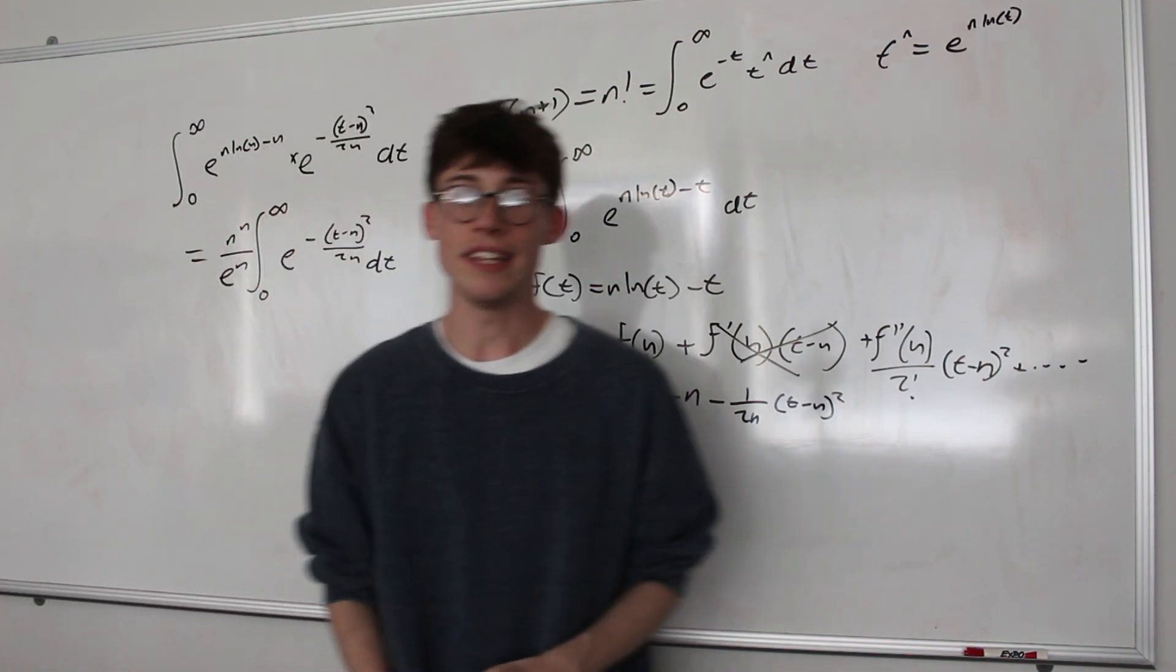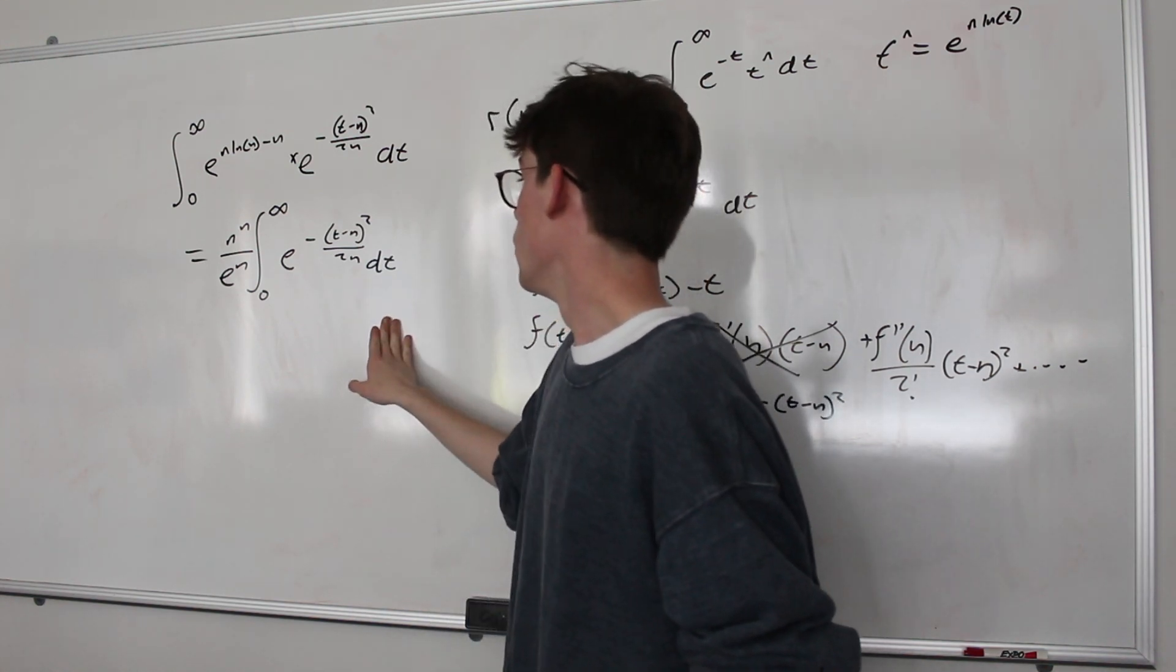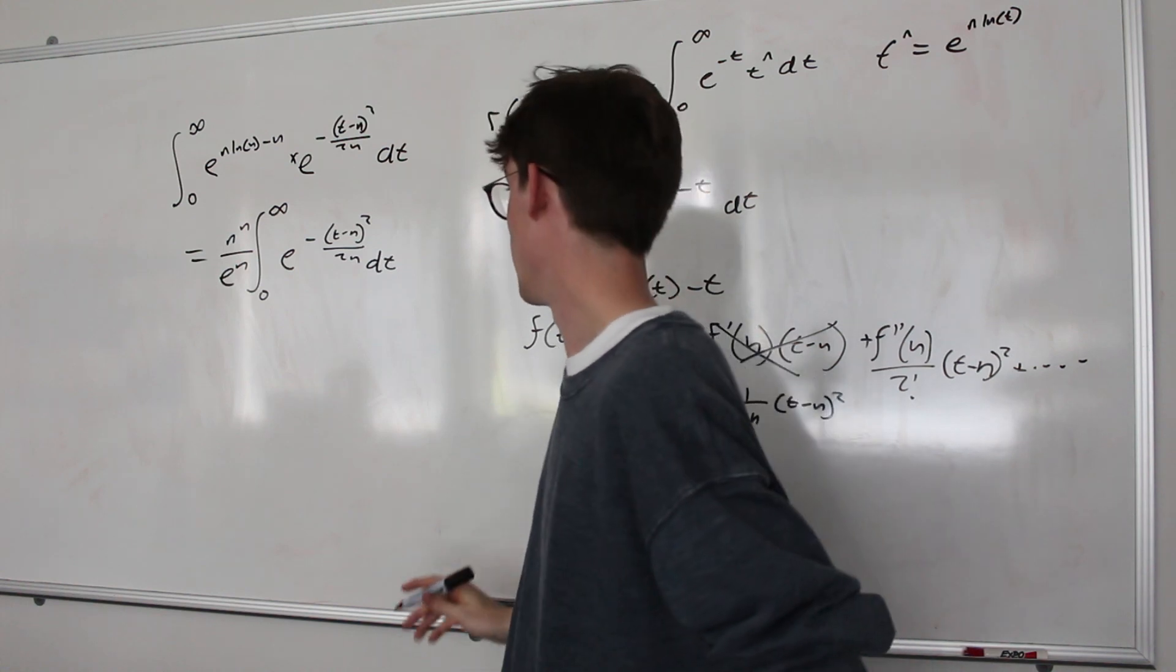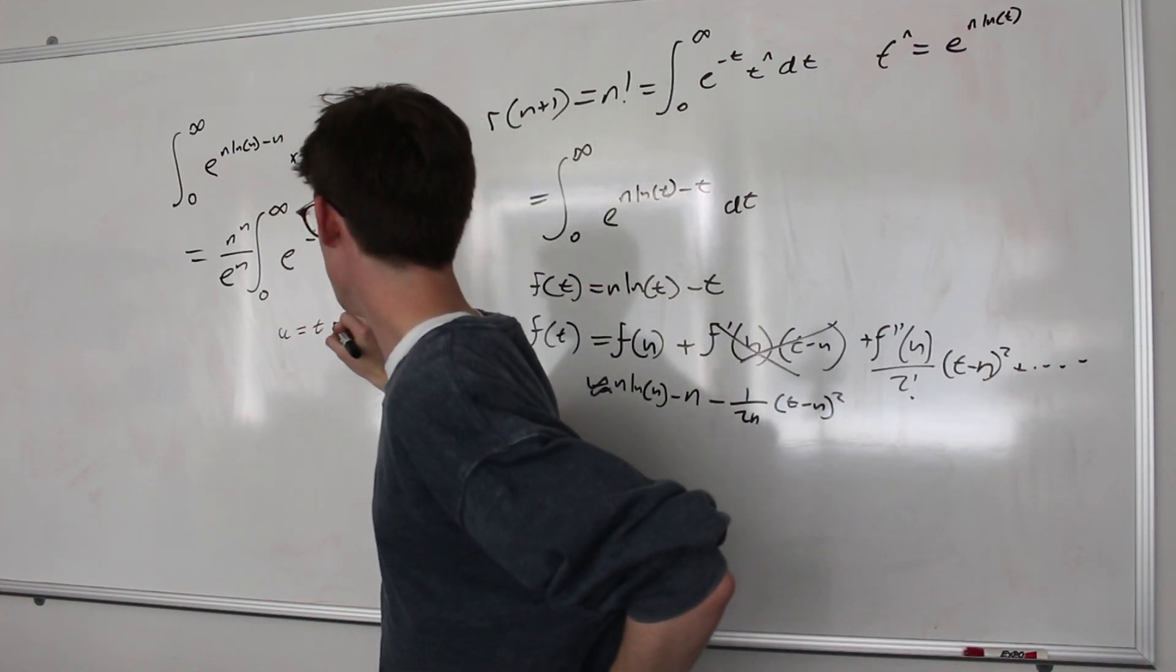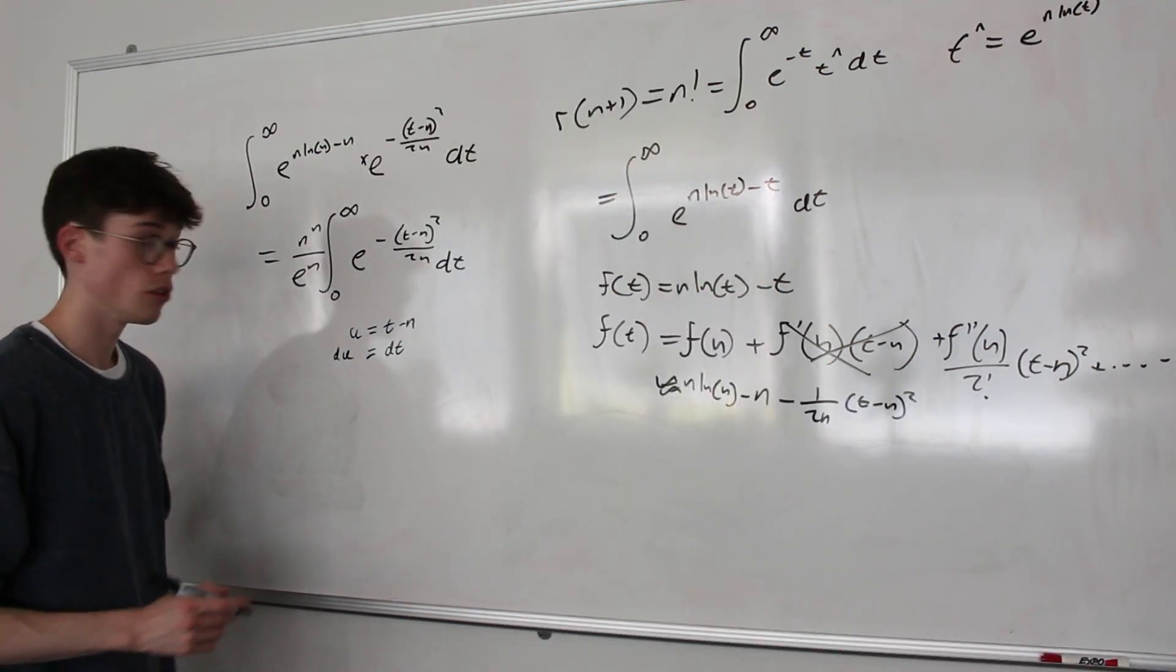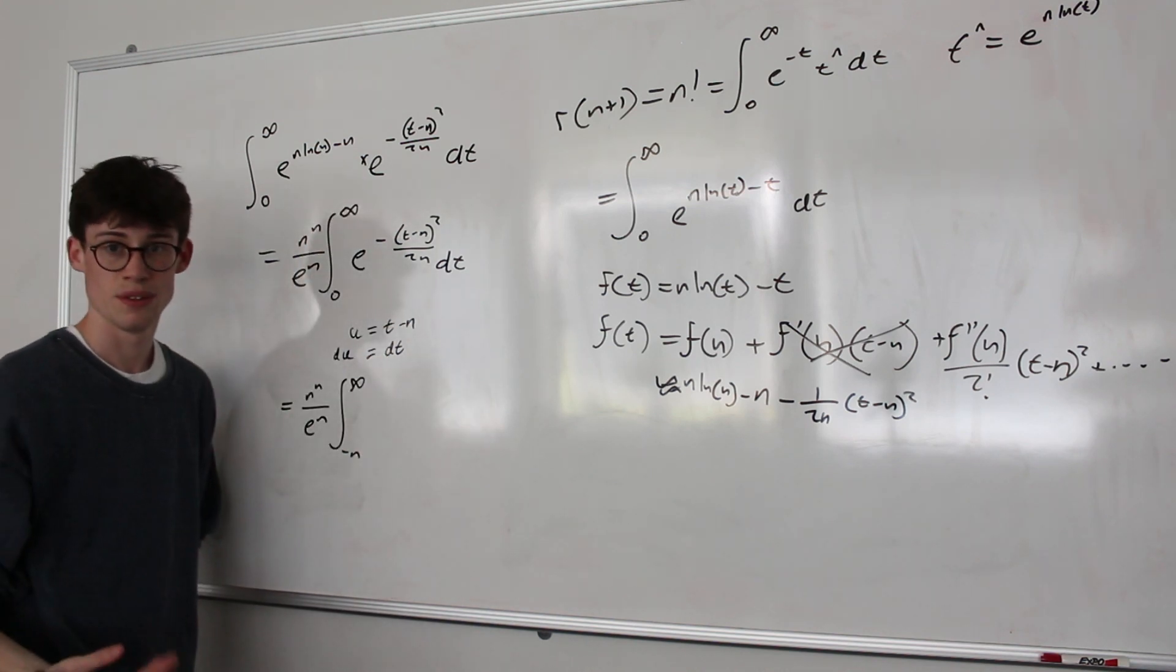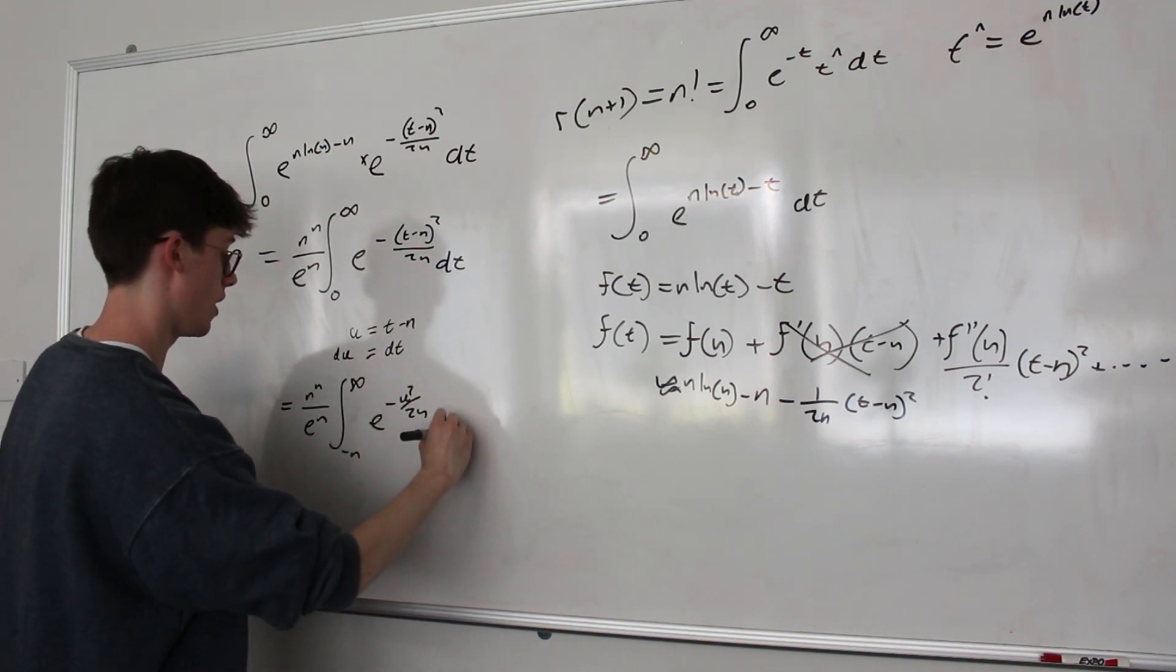So any of you who have seen the evaluation of the Gaussian integral might see where this is going. We're going to be looking to do something that's in the form of a Gaussian integral, but we've got to make a few substitutions to get there first. The first one that's coming to my mind is to let u equal t minus n. And of course that means that du is just equal to dt, so we don't have any complicated things to do there. And actually that leaves us with our integral being equal to n to the n over e to the n, times the integral from negative n to infinity, because of course infinity minus n is still infinity, of e to the negative u squared over 2n du.